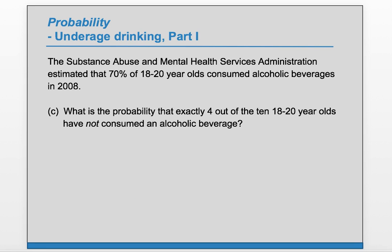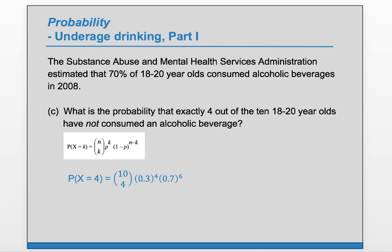Part C: What is the probability that exactly 4 out of 10 18-20 year olds have not consumed an alcoholic beverage? We want the probability that x equals 4, so we do 10 choose 4. Since we're interested in 'not consumed,' our p is now 0.3. So we'll have 0.3 to the 4 and therefore 0.7 to the 6. We get the same answer, because if exactly 4 have not consumed an alcoholic beverage, then exactly 6 have — it's a restatement of the previous question.